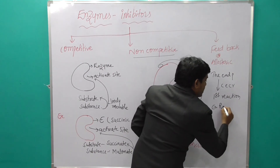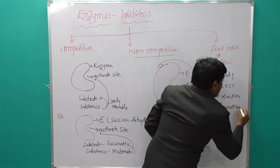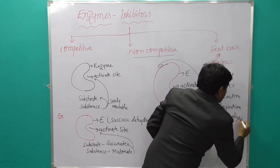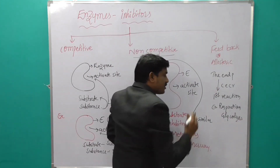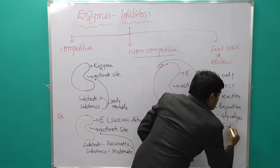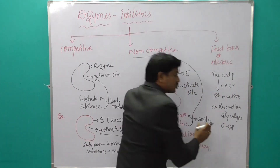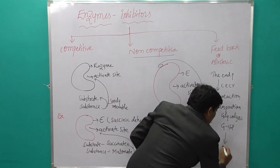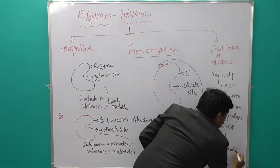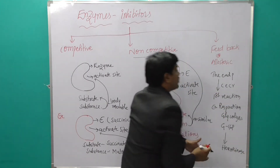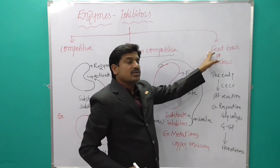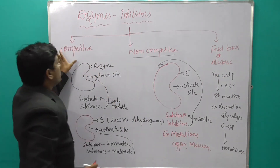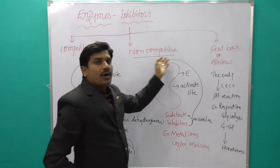The best example is in respiration. In glycolysis, the first stage converts glucose to glucose-6-phosphate. This step is inhibited by hexokinase — this is the best example of feedback, also called allosteric inhibition.